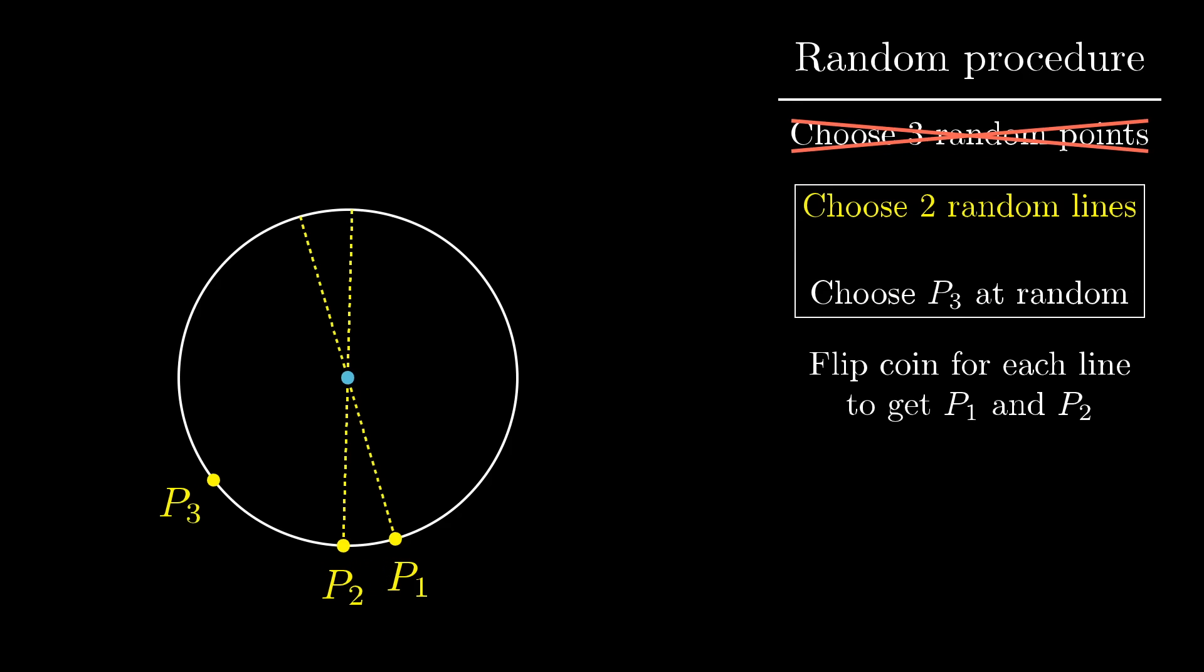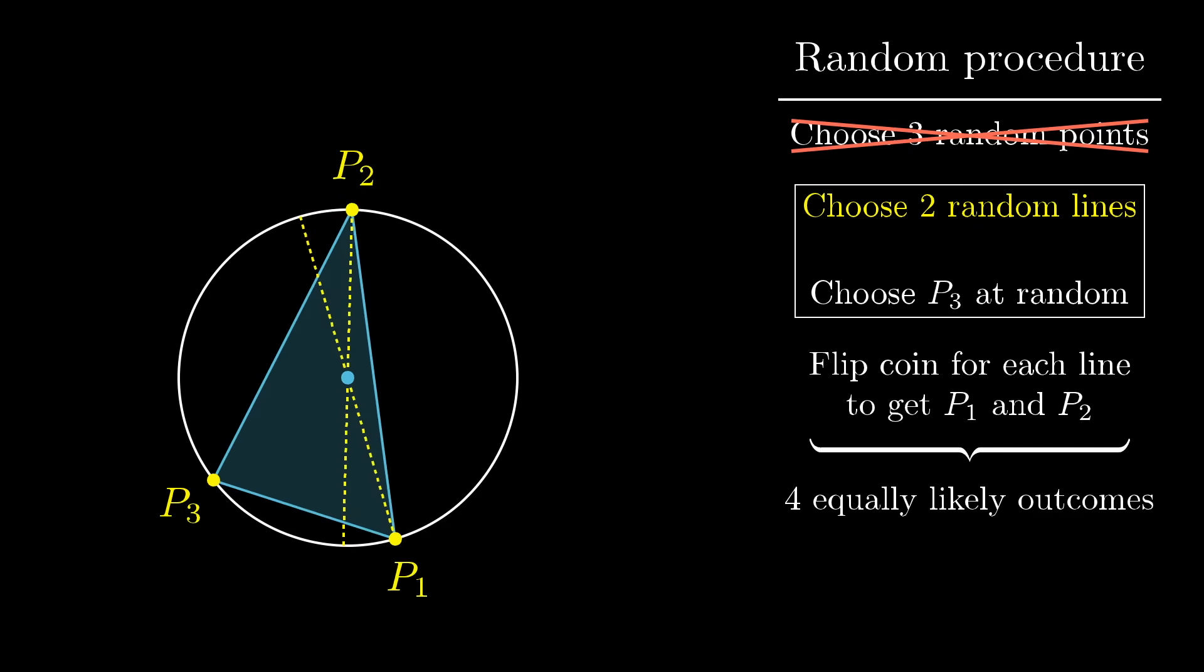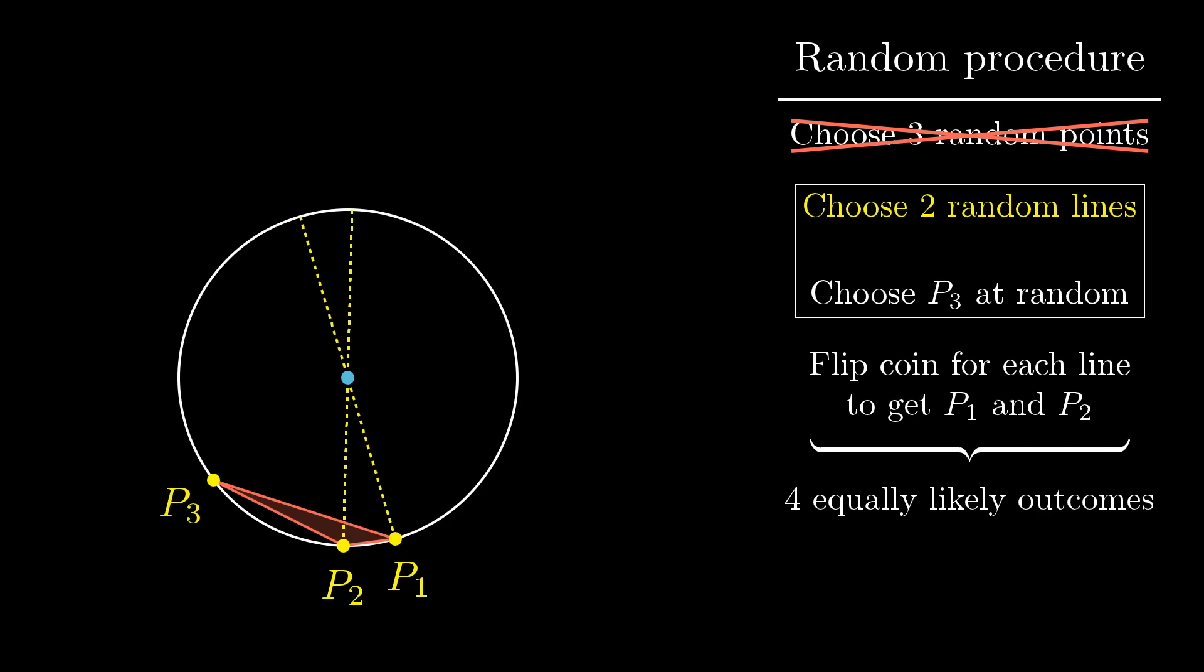Because you see, once the two lines and that third point are set in stone, there's only four possibilities for where p1 and p2 might end up, based on those coin flips, each one being equally likely. But one and only one of those four outcomes leaves p1 and p2 on the opposite side of the circle as p3, with the triangle that they form containing the center.